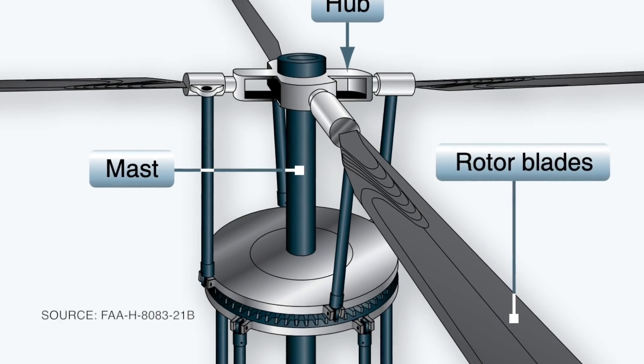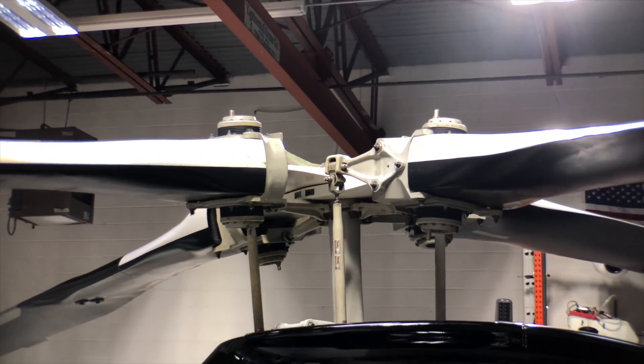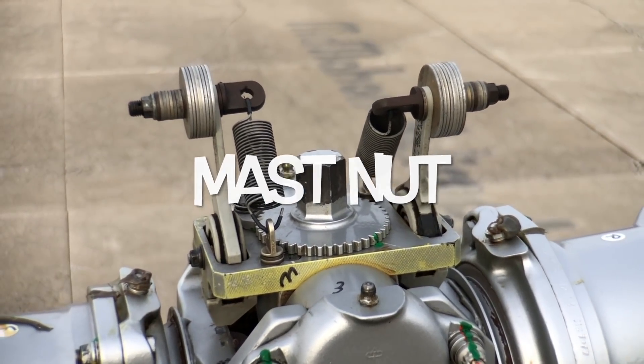The main rotor blades spin around the rotor mast, and the entire helicopter hangs from the rotor mast. Some helicopters have a stationary mast with a separate drive shaft inside, but many use a spinning rotor mast that doubles as the structural component and the drive shaft. The rotor blades are attached to the rotor mast with a single nut called the mast nut, but often called the Jesus nut — because you pray to Jesus that it doesn't come off. The mast nut is torqued to a large value of foot-pounds using an extremely long wrench.